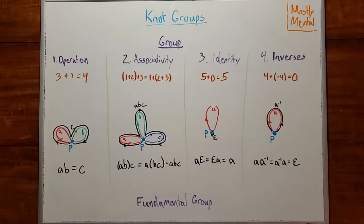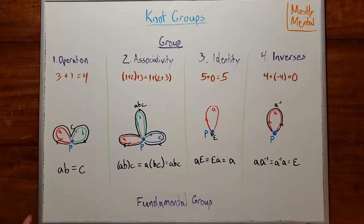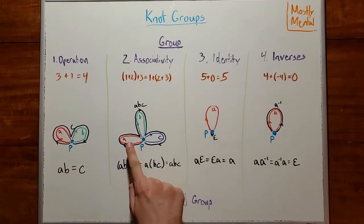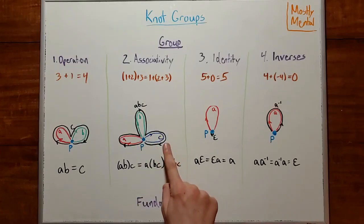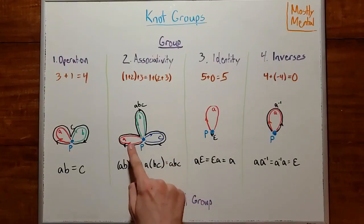In the case of our paths, the most natural operation is to just add the paths together by walking along one and then the other. And since both paths start and end at the pond, their sum will as well. So it will always be a valid path. If we have three paths, it doesn't matter whether we walk A and B and then C, or A and then B and C. We're still walking A, then B, then C. The grouping doesn't really matter. So this addition is associative.